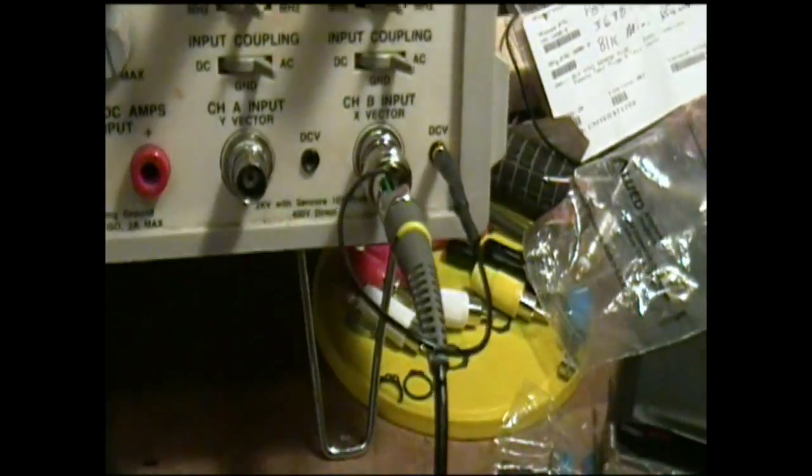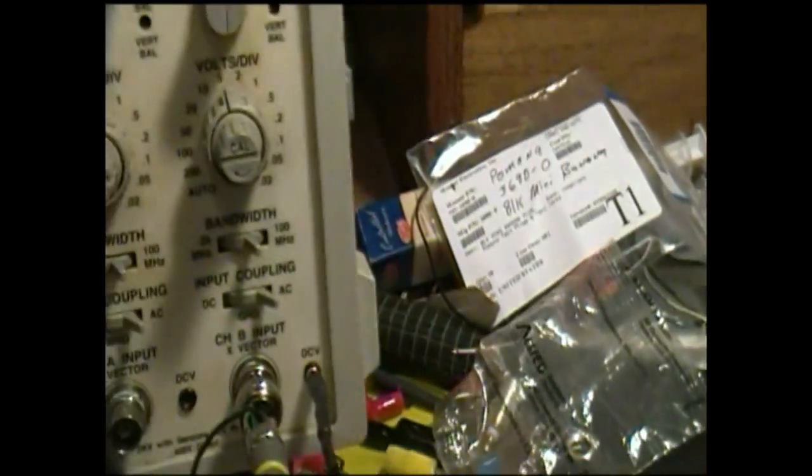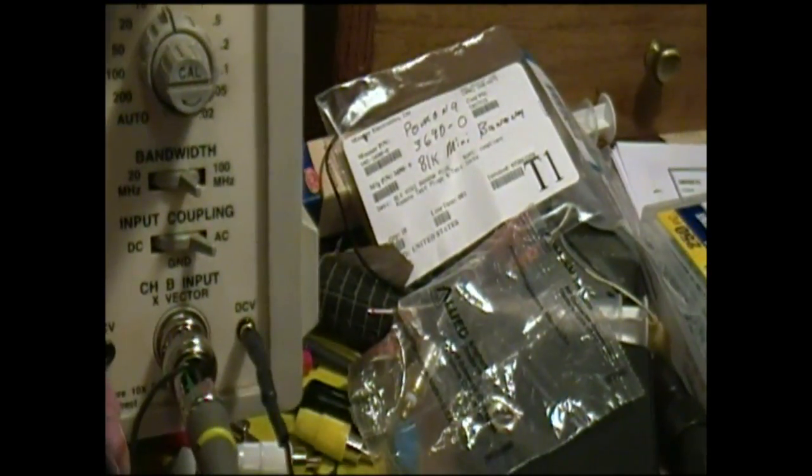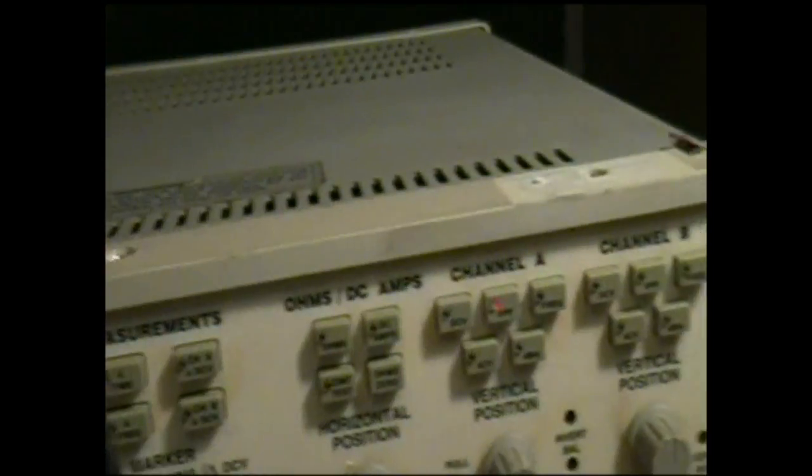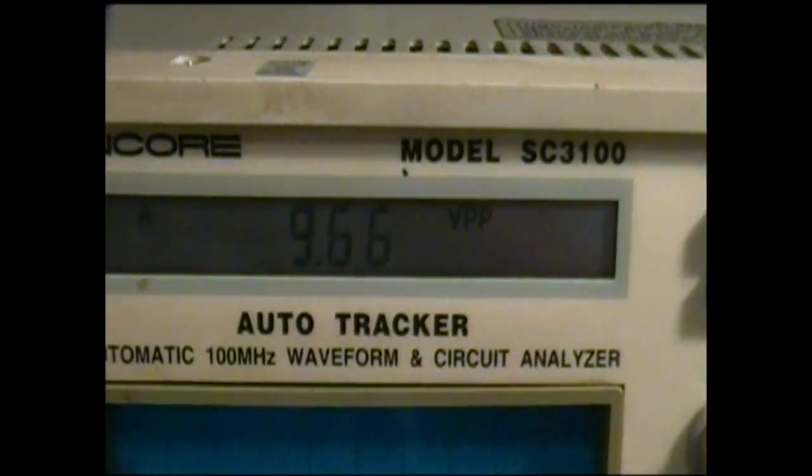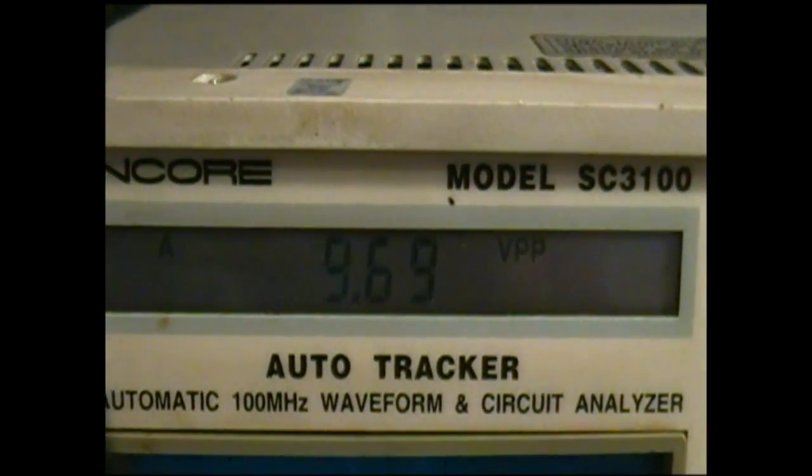Here is what now happens. I have this scope set up, and if you notice right here if I press volts peak to peak, of course it gets zero because there's nothing on this probe right now. So now I'm going to put the input in and you'll probably see as I make contact it reads 9.69 or 9.7 volts peak to peak.